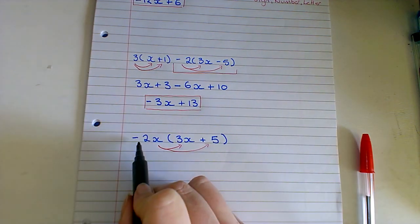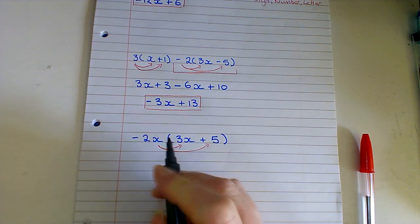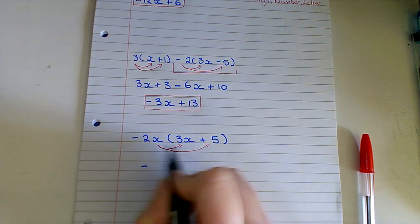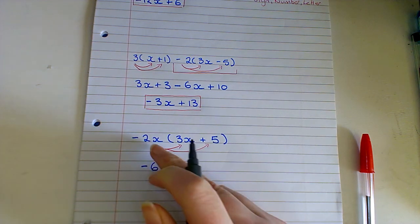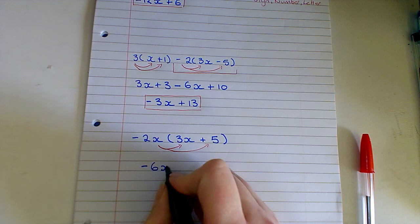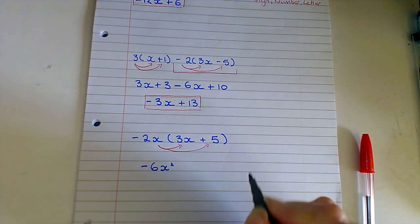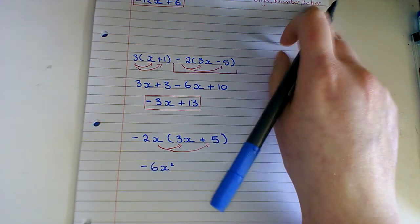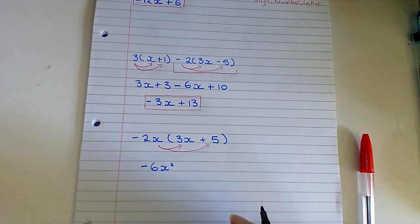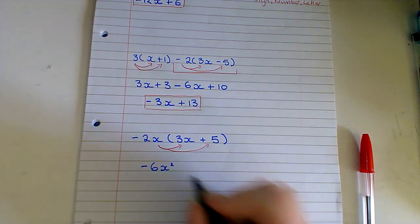So I'm checking here my sign. A minus by a positive is a minus. 2 by 3 is 6. And then x multiplied by x gives me x squared. So that's where the letter from this bit up here becomes a bit more important when you have more than one letter.